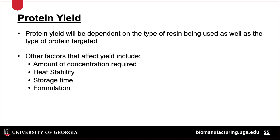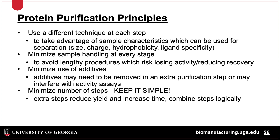Protein yield — how much protein we recover from the purification — is dependent on several factors, including the type of resin used as well as what type of protein we are trying to purify. Other factors that affect yield include concentration of the protein, how stable it is at different temperatures, how long it is stored, and the buffer formulation it is stored in. Other considerations include incorporating different techniques for each purification step, meaning not using the same chromatography modality twice in a row. It is also important to minimize handling between steps, complete the entire process in as little time as possible, minimize additives that could interfere with assays, and keep the process as simple as possible.